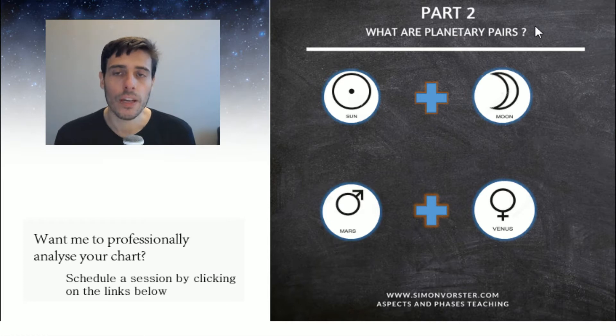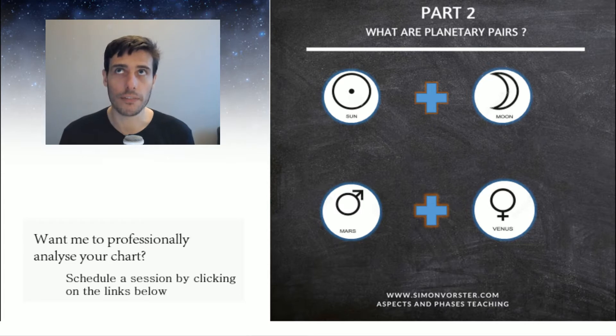So what are planetary pairs? Planetary pairs simply identifies that when we are looking at the development of life, there are certain aspects of the developments that go together. So in this example here, I've got the sun and the moon.